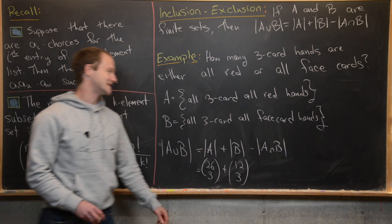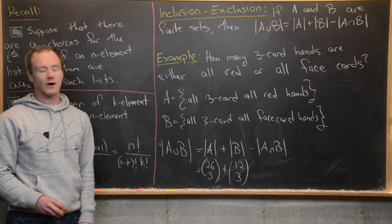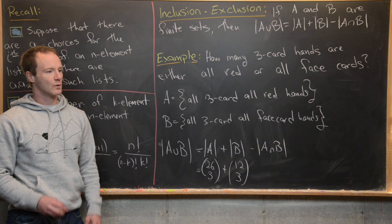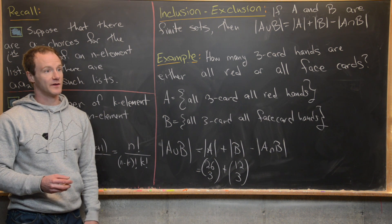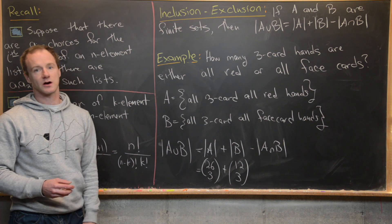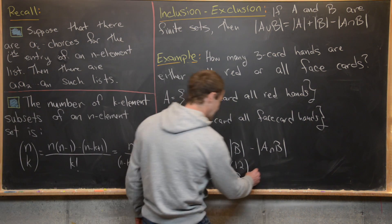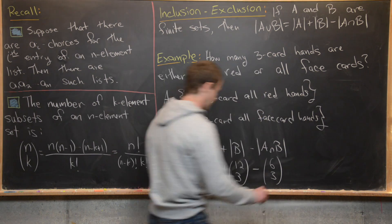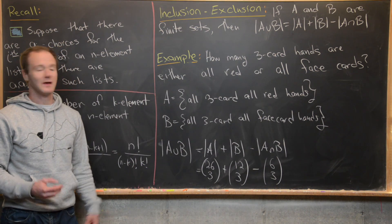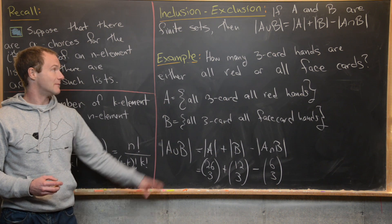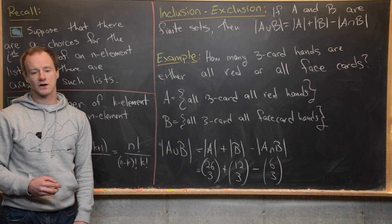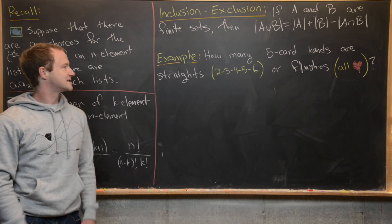For the intersection, we need three-card hands that are both red and face cards. There are six red face cards — three hearts and three diamonds — so we subtract 6 choose 3. That gives us the total number of three-card hands that are either all red or all face cards.